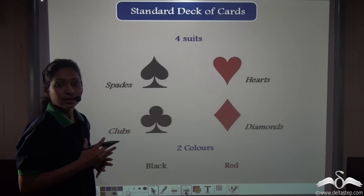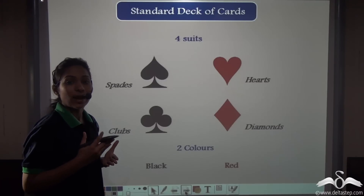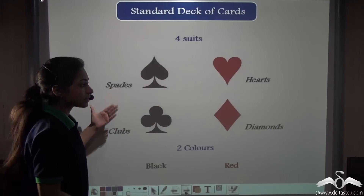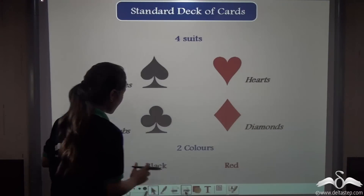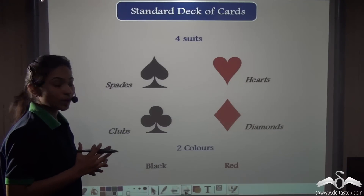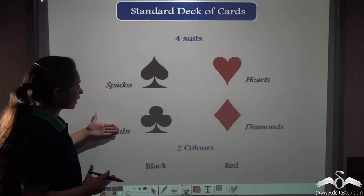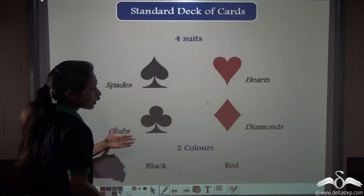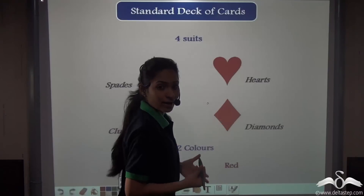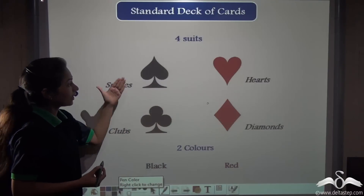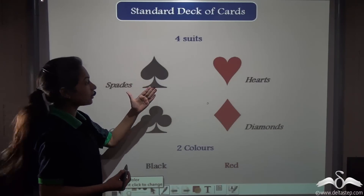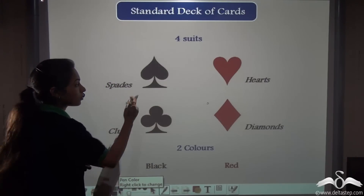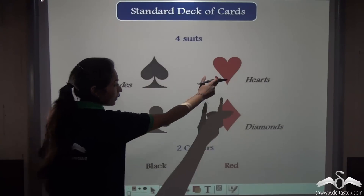These 52 cards are divided into 4 categories or 4 suits known as Spades, Hearts, Diamonds and Clubs. Spades and Clubs are black in colour, and Hearts and Diamonds are red in colour. So the standard deck of cards is divided into 4 suits, 2 of the same colour — black and red.